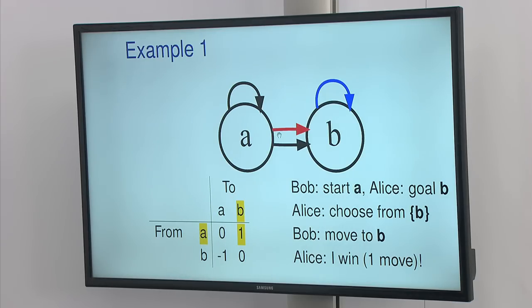But if Bob says, I'm going to start at A, and Alice says the goal is B, then Alice can choose either the pair of black arrows, in which case Bob would have A or B to choose from, or she could choose the red arrow. And if she chooses the red arrow, that will force Bob to move to B in his first move, and then Alice wins in one move.